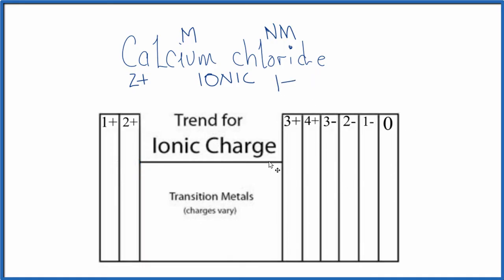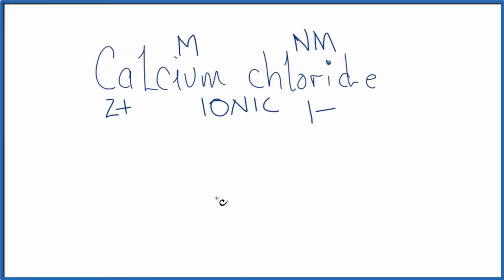There's a link to a more in-depth discussion about ionic charge at the end of this video. So we write Ca and Cl. We said two plus and one minus. We're going to use the crisscross method. We move the one here,